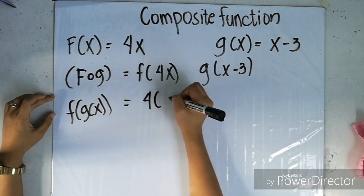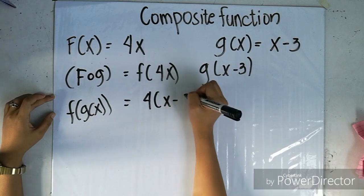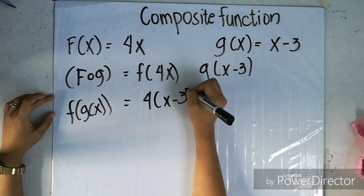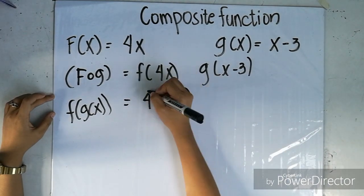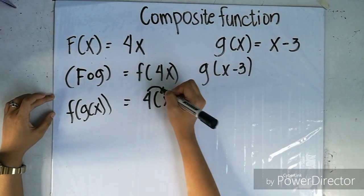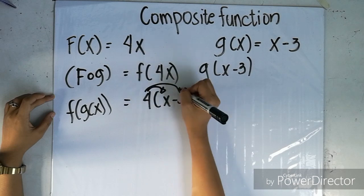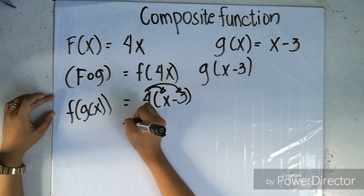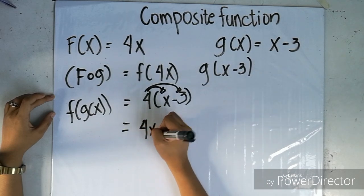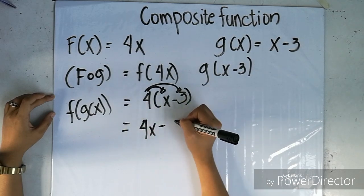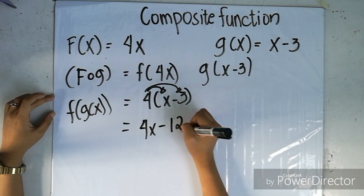First, substitute the value of x by x minus 3 and simplify. The answer must be 4x minus 12.